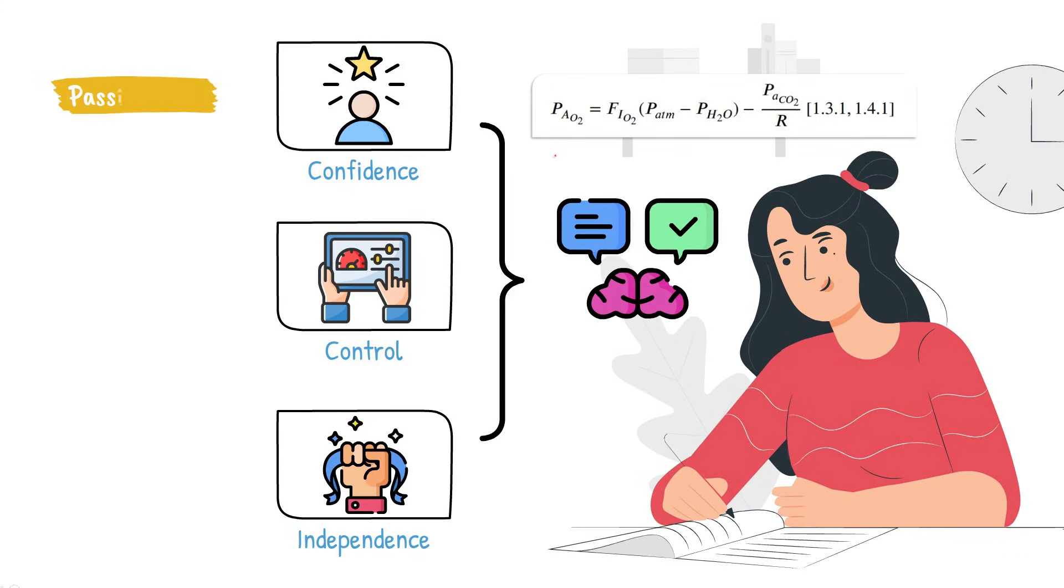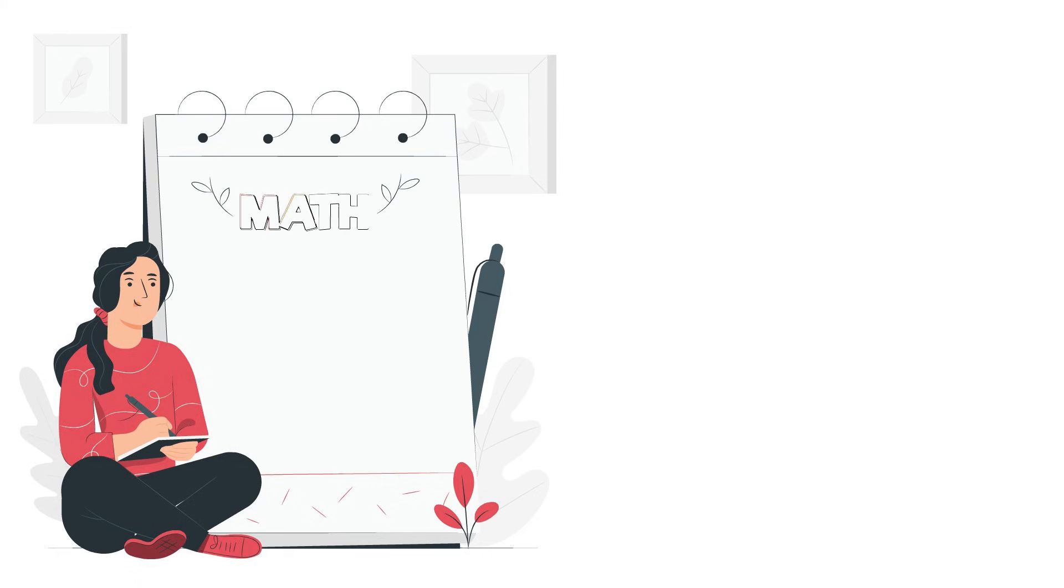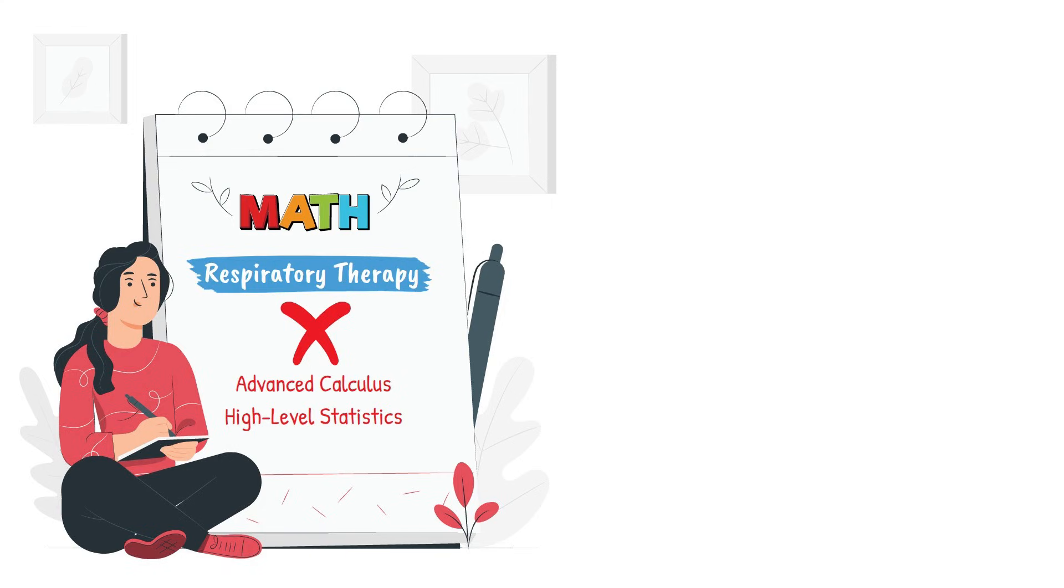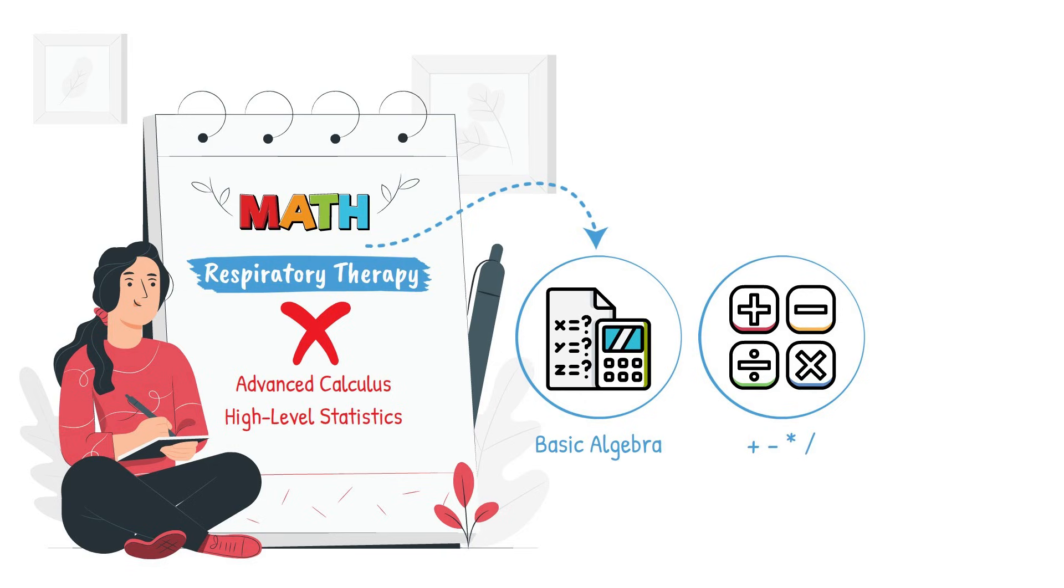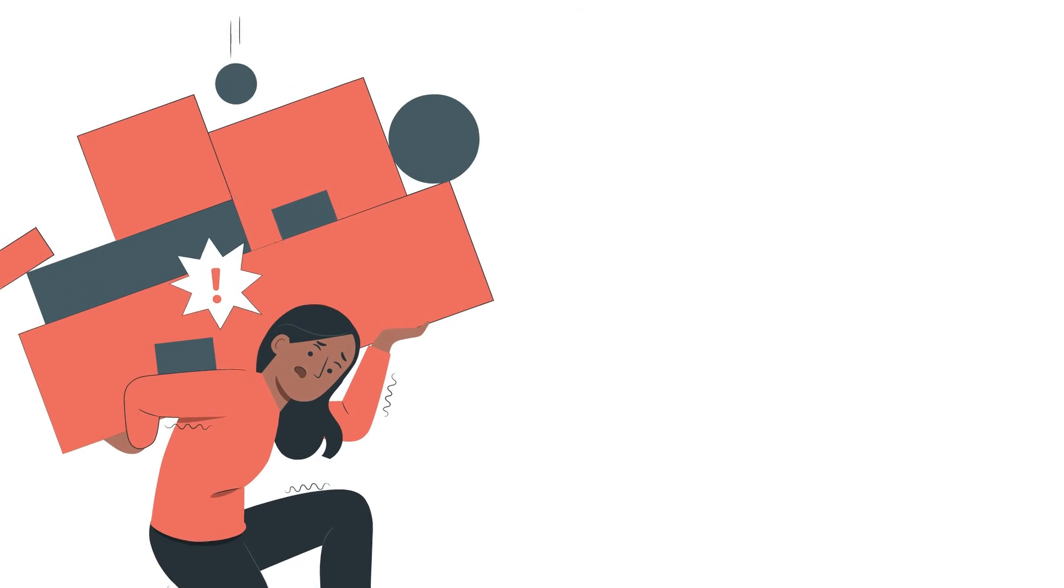It turns a passive skill into an active part of your critical thinking toolbox. It's also worth noting that the math used in respiratory therapy isn't advanced calculus or high-level statistics. Most of it involves basic algebra, including addition, subtraction, multiplication, division, and working with ratios and percentages.